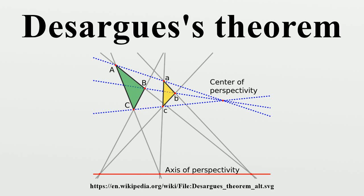Desargues's theorem holds for projective space of any dimension over any field or division ring, and also holds for abstract projective spaces of dimension at least three. In dimension two, the planes for which it holds are called Desarguesian planes and are the same as the planes that can be given coordinates over a division ring.